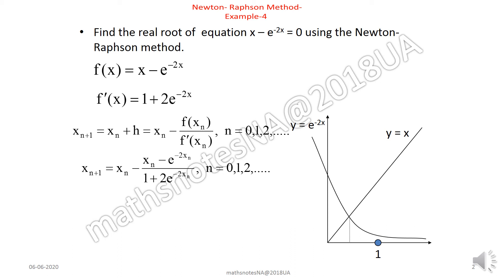Now we put value of function and its derivative in the formula. When n = 0 we will find out x₁. But the term which is [x_n - e^(-2x_n)]/[1 + 2e^(-2x_n)] we first calculate this one. And we take x₀ as 0.5 as an initial approximation.